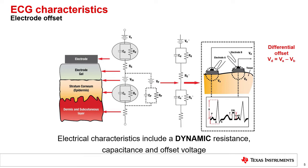The diagram on the right illustrates how two electrodes may be resting at different DC potentials, VA and VB. The difference between them is the differential offset voltage for that lead, or VD. Standards for ECG equipment specify that the ECG must still be measurable in plus or minus 300 millivolts of differential offset.